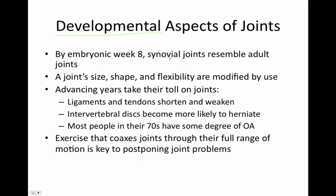Developmental aspects of joints: by embryonic week eight, synovial joints resemble adult joints — pretty amazing that after conception by week eight, those joints already resemble adult joints. Joint size, shape, and flexibility are modified by use. Advancing years take their toll: ligaments and tendons shorten and weaken, intervertebral discs become more likely to herniate — interestingly, we're about one centimeter shorter by end of day due to gravitational compression of the discs. Most people in their seventies have some form of osteoarthritis, and exercise through the full range of motion is key to postponing more joint problems.